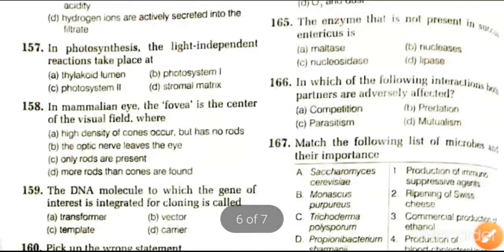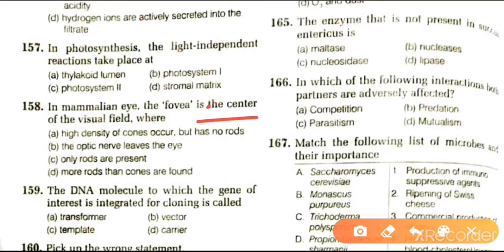Next question: in the mammalian eye, the fovea is the center of visual field where there is high density of cones and no rods. The optic nerve leaves the eye with only rods present, or more rods than cones are found. The answer is high density of cones with no rods.